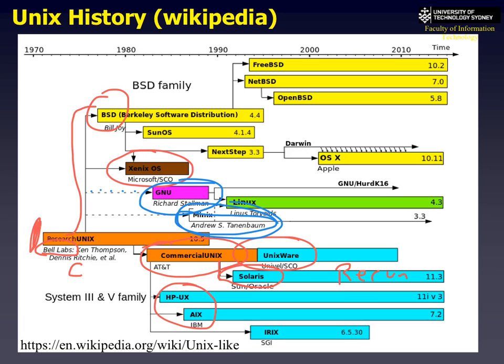Linus Torvalds got a copy of both and developed his own operating system called Linux, as a play project, which became the Linux we all love and know today. Be aware that there are many other versions of Unix around. FreeBSD and OpenBSD are based on the original development and are very popular for security researchers.